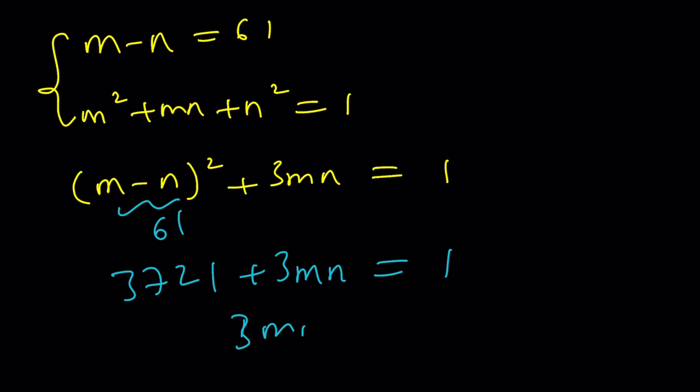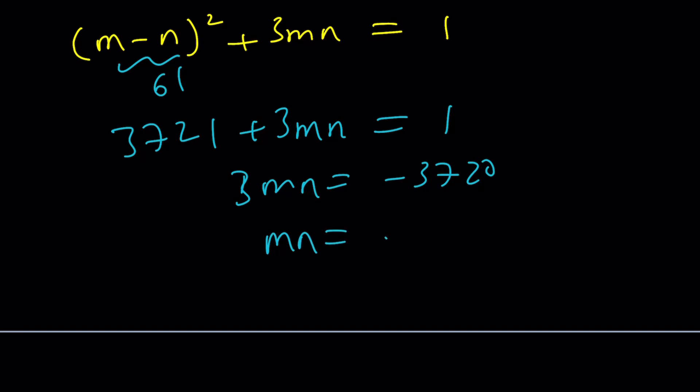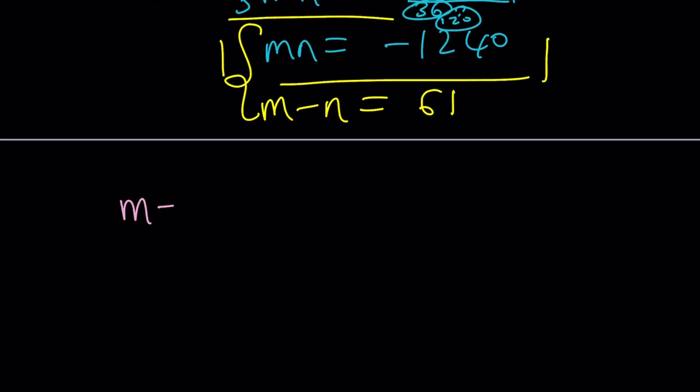From here, we get 3mn equals negative 3,720. If you divide by 3, mn would be negative 1,240. This is how I divide by 3. When I get a number like this, 37 is not divisible, but 36 is. So I'm thinking about it as 36, and there's a 120. If you divide by 3, you get 12, and then this is 40, so 1240. So that's mn. I also know that m minus n is equal to 61.